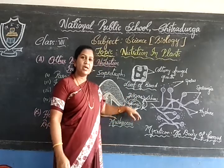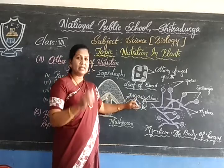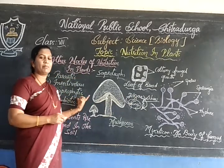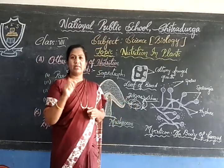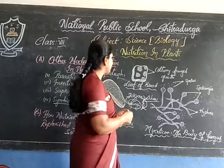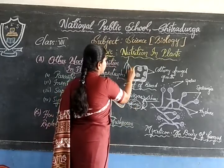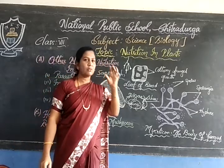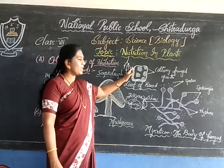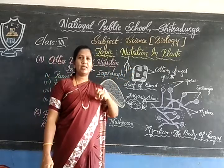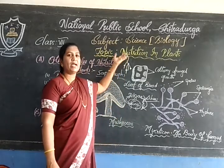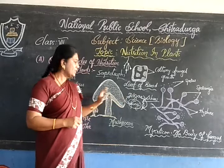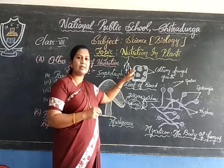Neither the algae harms the fungi nor the fungi harms the algae. Such a type of association is called a symbiotic association. Another very good example is the Rhizobium bacterium residing in the root nodules of leguminous plants. In the roots of the leguminous plant, we can see nodules, and on opening a fresh one, we can find the Rhizobium bacterium. This Rhizobium resides in the root nodule, absorbs nitrogen, and supplies it to the plant. In return, the plant provides food and shelter for the Rhizobium.